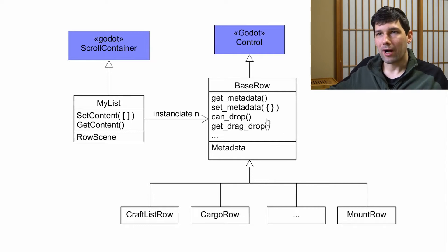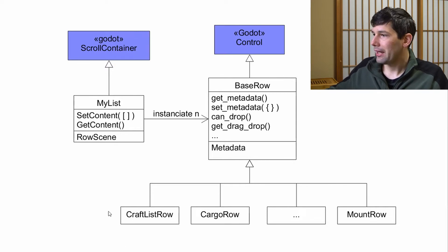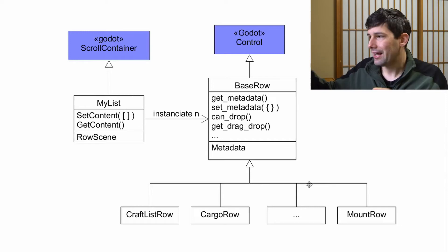The BaseRow is basically just a control that gets added to the ScrollContainer. It has a couple of methods you can optionally re-implement, but the base system works for nearly anything. If you need to add a button with custom code, you can do that in a subclass of BaseRow. By default, the BaseRow handles all the metadata, drag-and-drop, and that kind of stuff. I already have a craft list row, a cargo row, and a mount row, with more planned.